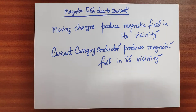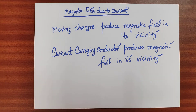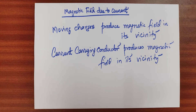Magnetic field due to current. It has been experimentally observed that moving charges produce a magnetic field in their vicinity. And also a current carrying conductor produces a magnetic field in its vicinity.